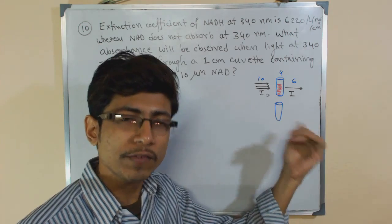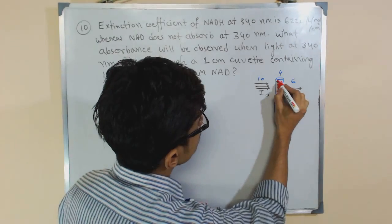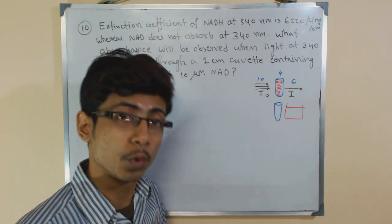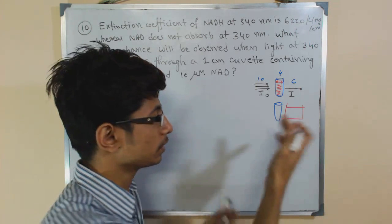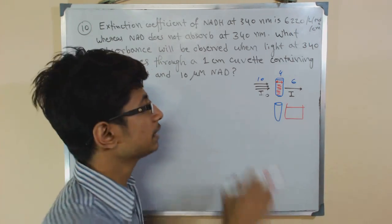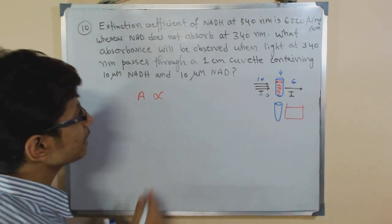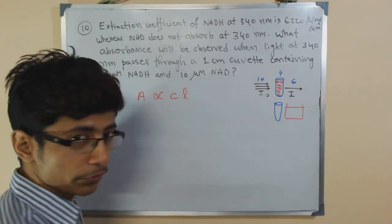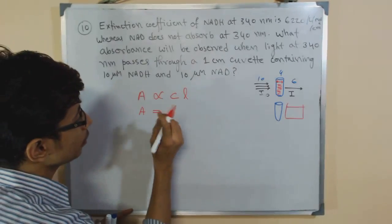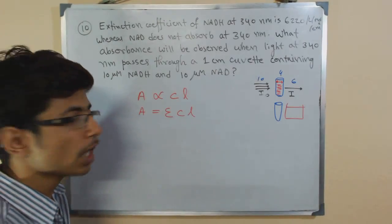According to our primary knowledge, if the concentration inside the cuvette is higher, it will absorb more. If the cuvette length is greater — meaning the cuvette is broader — it will also absorb more because it contains more solution with more distance for light to cover. That's why, according to Lambert-Beer's law, absorbance varies with both the concentration and the length of the cuvette, with epsilon as the proportionality constant.